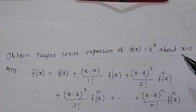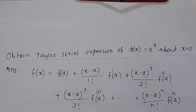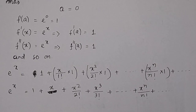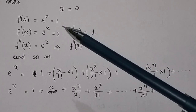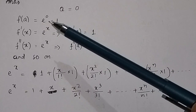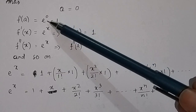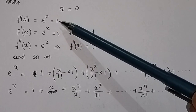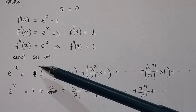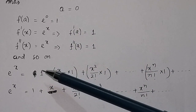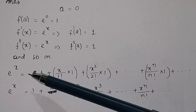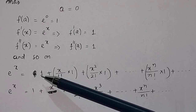Here it is given that a = 0. So if a = 0, then f(a) = e^0, because the function is e^x. Putting x = 0 gives e^0 = 1. So the first term of the Taylor series for e^x is equal to 1.